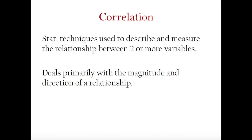In correlation, even when you have a dichotomous variable, its main concern is the measurement of the magnitude and direction of the relationship. To keep it simple, let's think about correlation as it applies to examining the relationship between two continuously measured variables. Pearson R correlation examines two things: the magnitude or strength of the relationship, and the direction of the relationship.